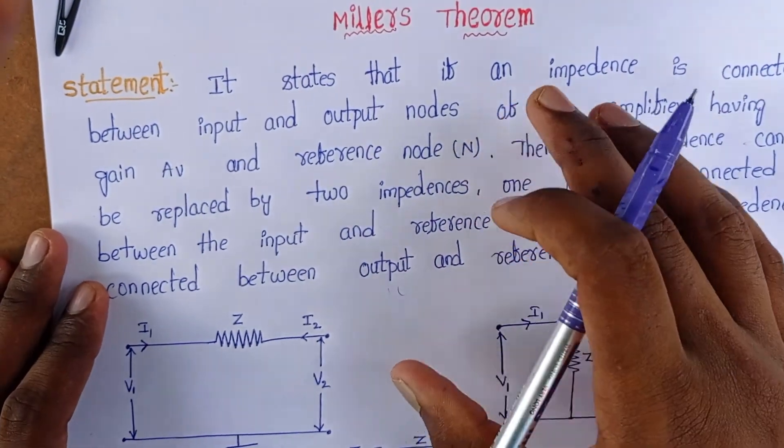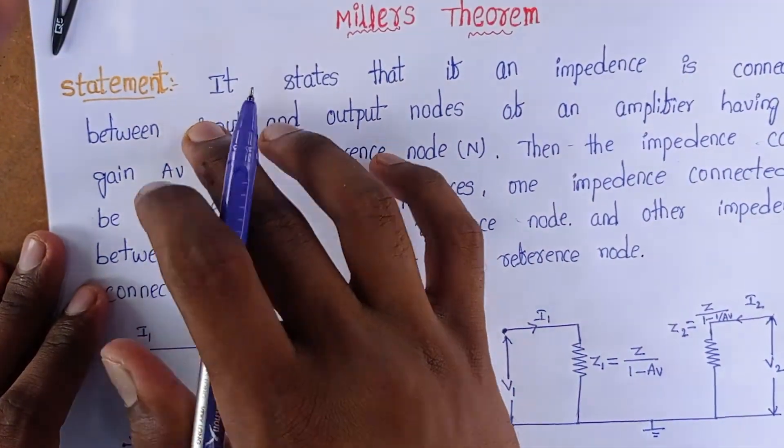This is one of the important theorems in network theory. Let's see the statement of Miller's theorem.